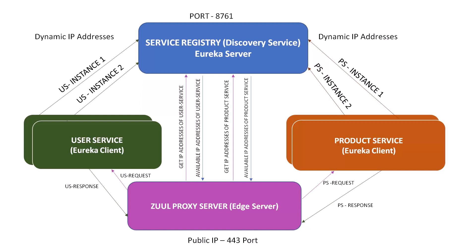This is the overall functionality happening between the service registry, Zuul proxy server, user service, and product service. The user service, product service, and Zuul proxy server — these three services should be registered with the Eureka server. Only the Zuul proxy server on port 443 has a public IP address so that the client can access it.